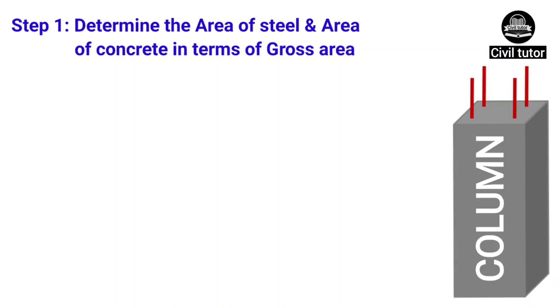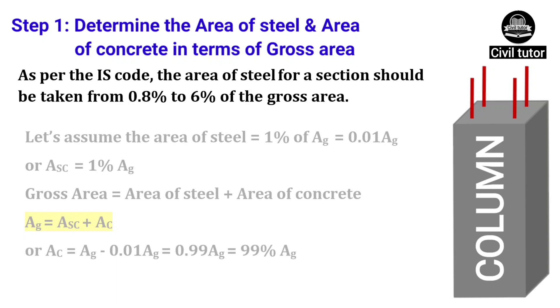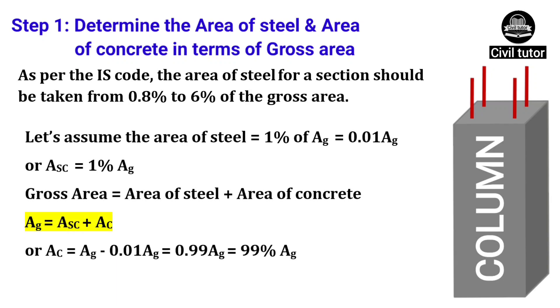The first step is to determine the area of steel and the area of concrete in terms of gross area. As per the IS code, the area of steel for a section should be taken from 0.8% to 6% of the gross area. However, the maximum area can be restricted to 4% of the gross area to avoid the congestion of reinforcement while concreting. Let's assume the area of steel equal to 1% of gross area or ASC will be equal to 1% of AG.